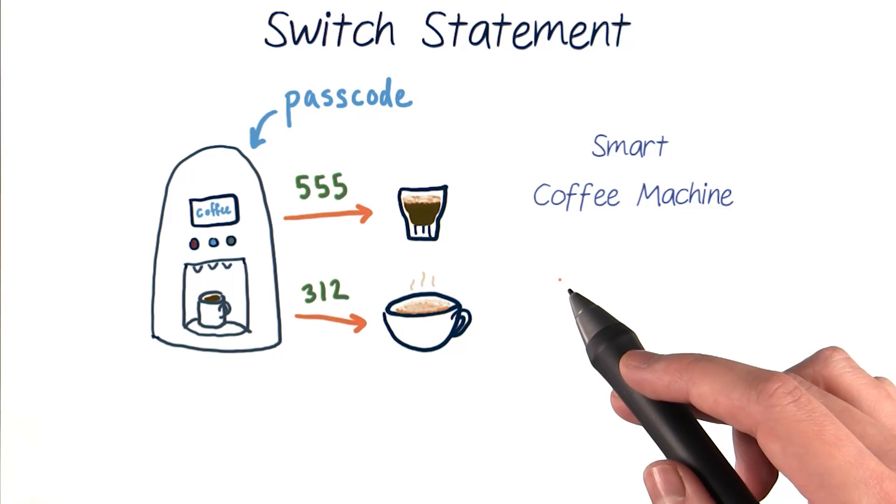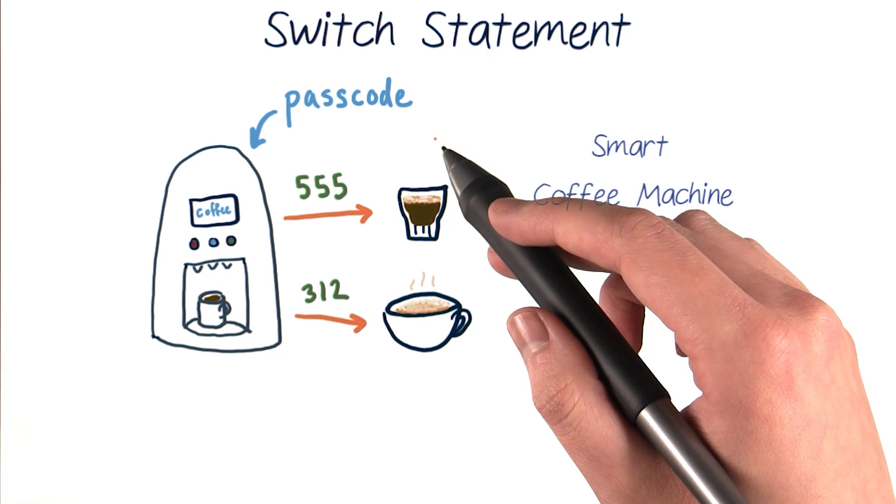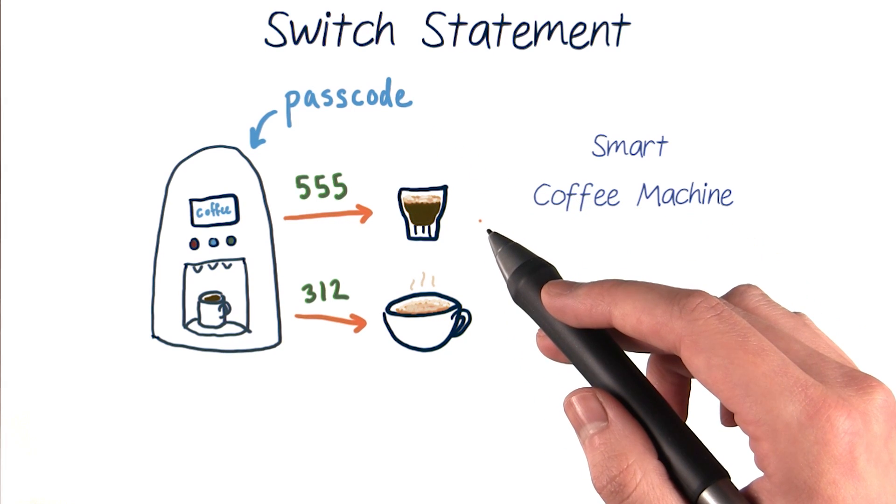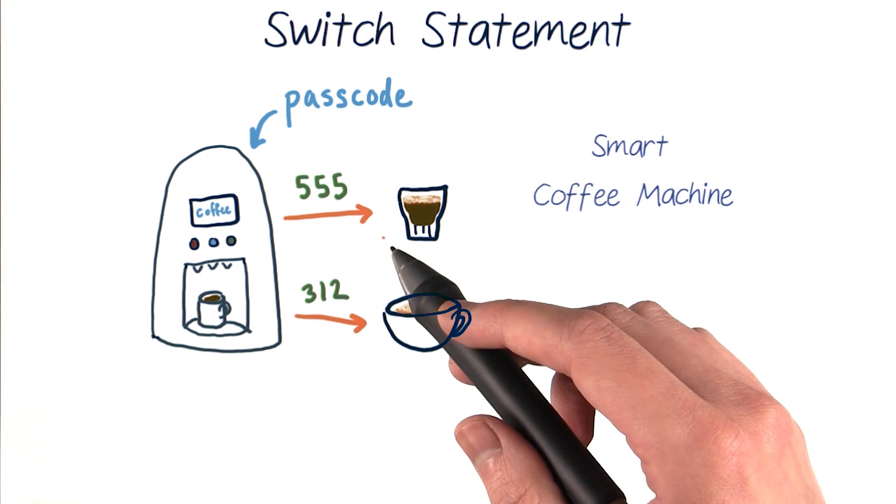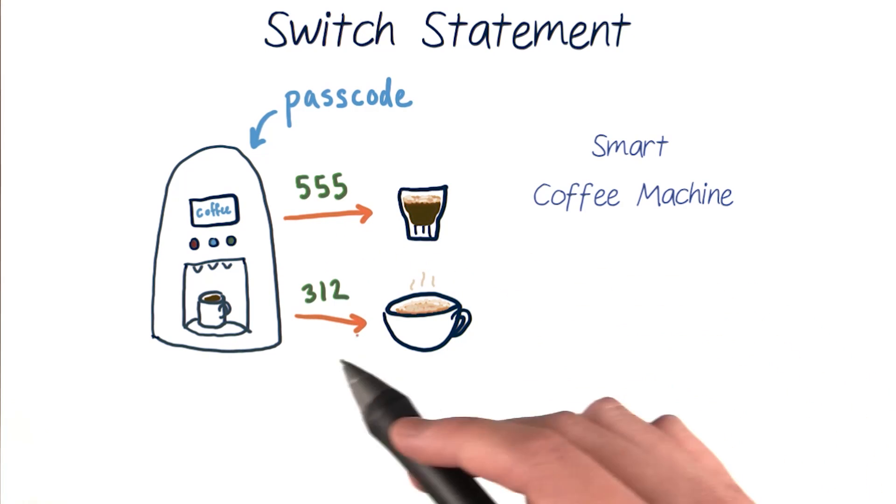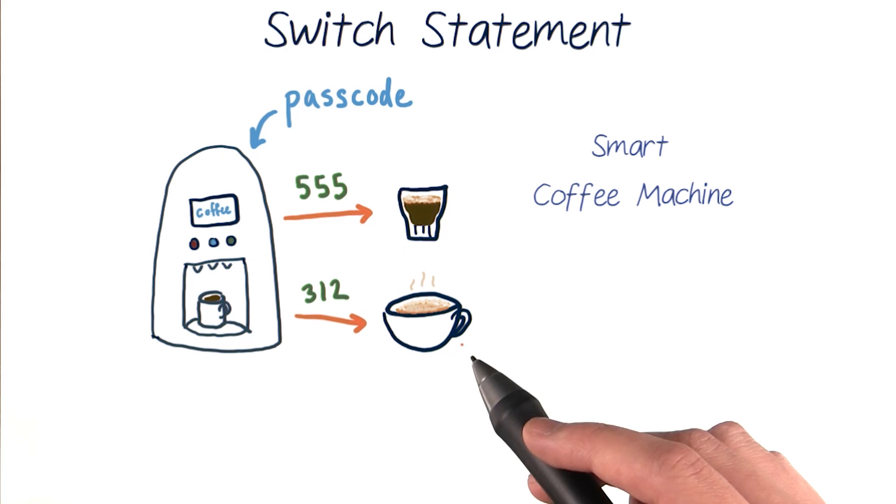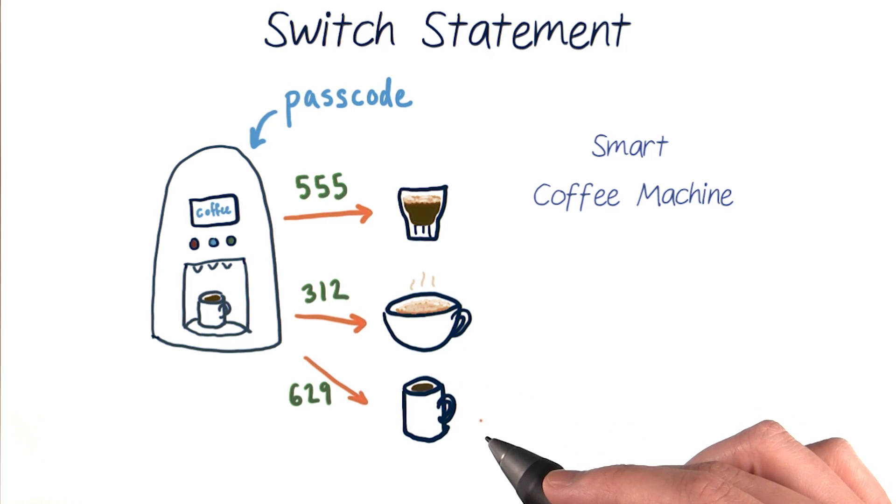For our smart coffee machine, we want it to check the value of an int variable called passcode, and test it for equality against a list of specific values that it can take. Passcodes like 555 for me and my espresso, and 312 for Asser and his vanilla latte. And let's include one more passcode, 629, that makes a drip coffee.